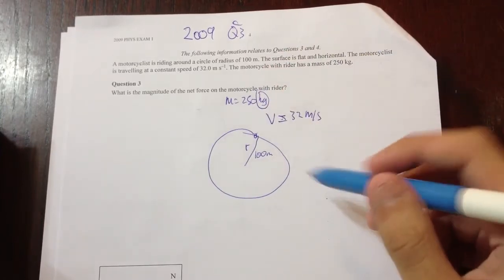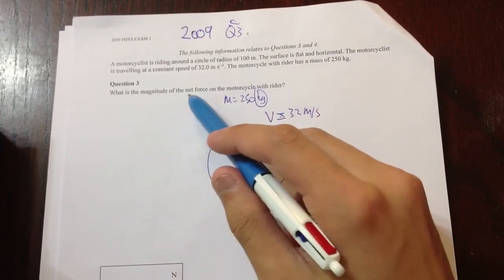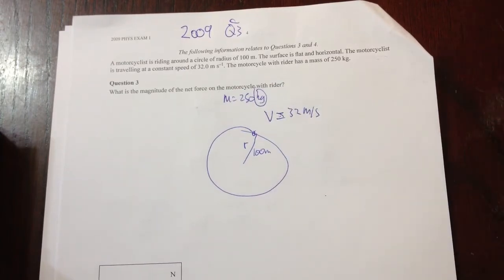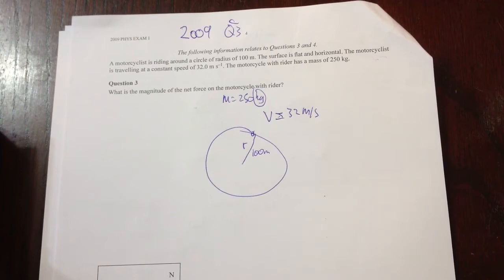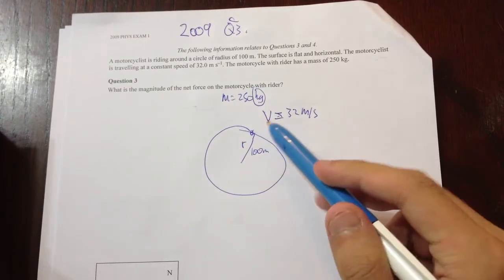So if you draw it out, it's pretty obvious what we need. What is the magnitude of the net force of the motorcyclist with the rider? Oh, my cheat sheet. Yeah, I scrumpled it.